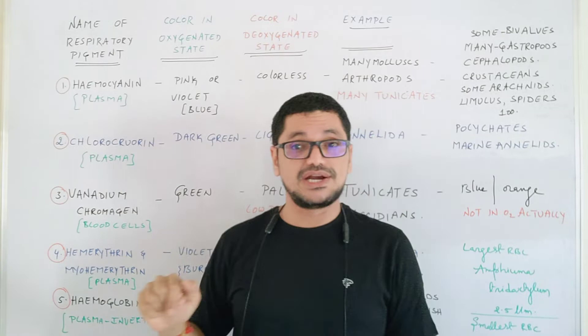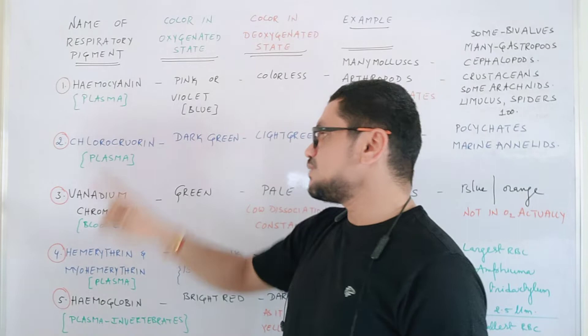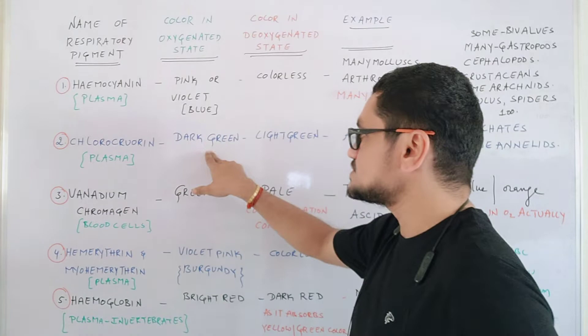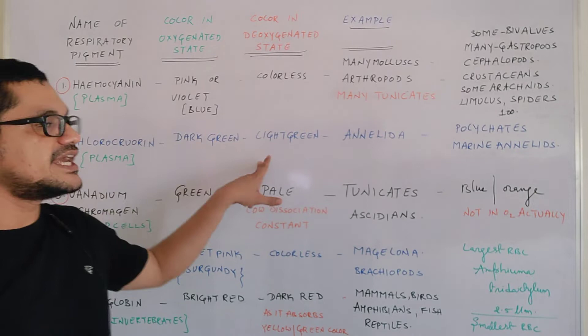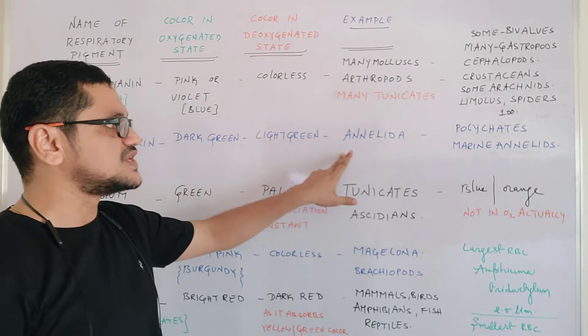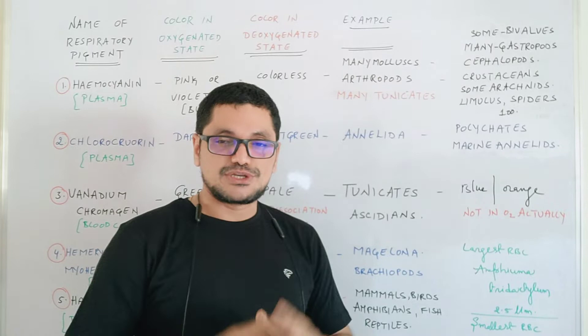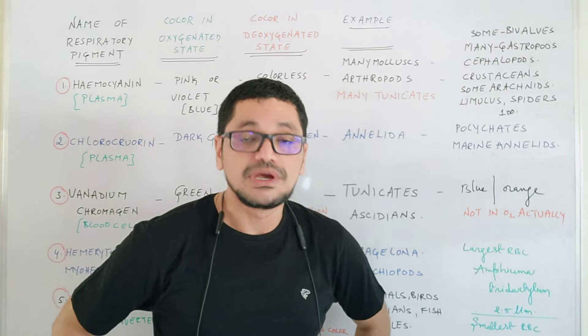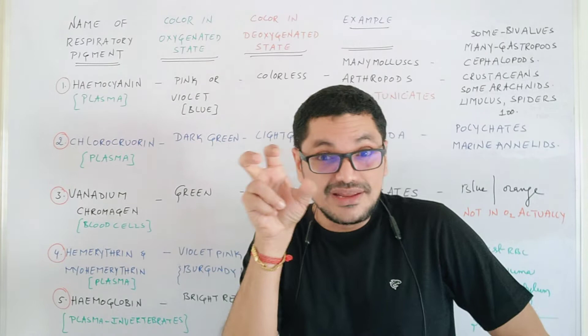The second respiratory pigment is chlorocruorin, which is also present in plasma. The coloration of chlorocruorin in oxygenated state is dark green in color, and in the deoxygenated state it also appears green but in a lighter greenish shade. It is seen in annelids — the best example being polychaetes, which live in a marine environment where the respiratory pigment is chlorocruorin, so blood is green in color.